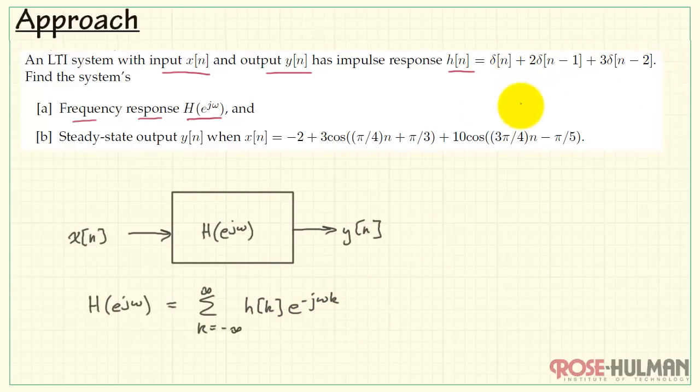Now we have specific values for h of n. We have an implied coefficient of 1, and this takes place at n equals 0. With this delayed impulse, we see that the coefficient is 2 at n equals 1 and 3 at n equals 2.